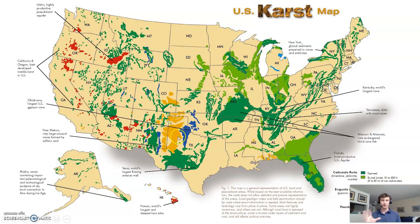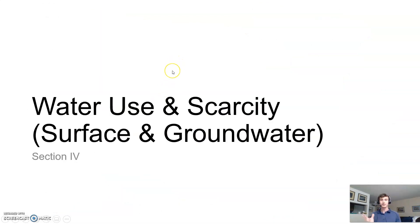This is a U.S. karst map showing all the karst landscapes in the United States. Obviously, I would expect students to have all of this committed to memory for an exam — of course, I am kidding. You can see in the southwest we have regions of heightened karst topography, a little bit in the Midwest, and notably the entire state of Florida — and even some Florida-adjacent areas — is essentially one big cave system as far as the subsurface goes. The final section will talk about water use and scarcity. See you later.